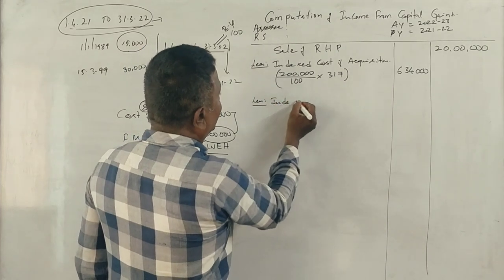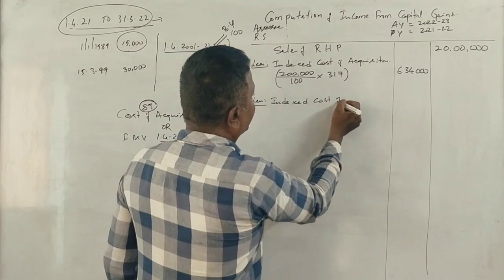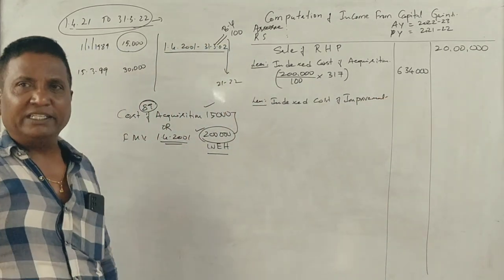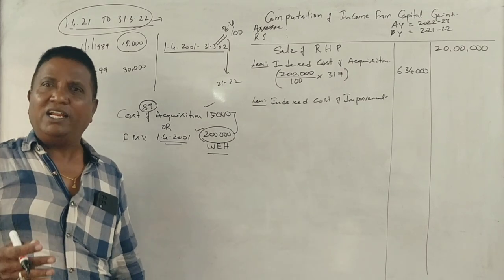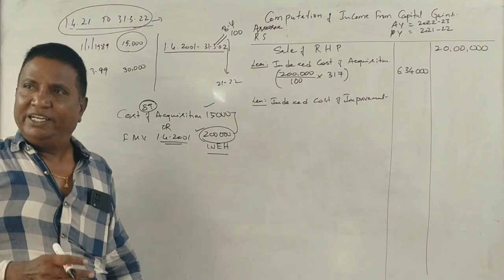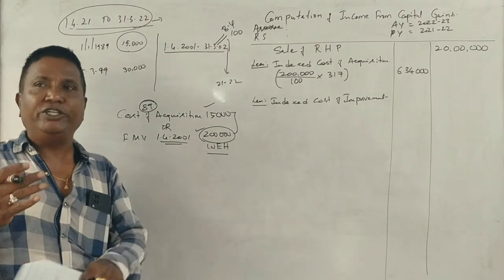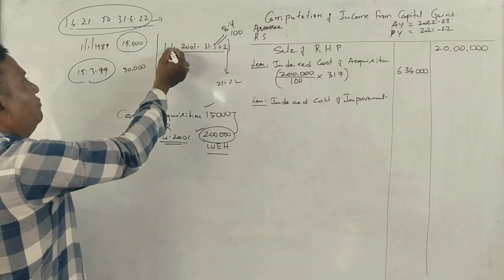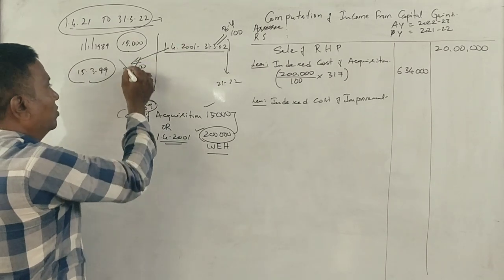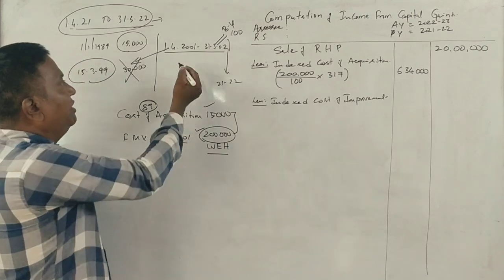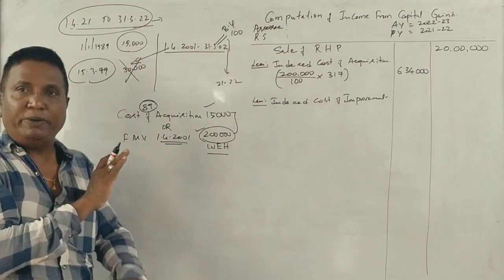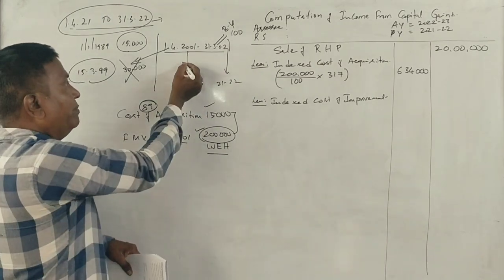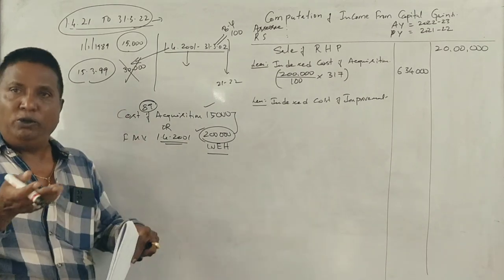Less indexed cost of improvement. Improvement and additions - if you add a first floor or full area, that's an improvement and addition to the house property. Now, any improvement made before 2001-2002 should be ignored. The 30,000 spent in 1999 is ignored. Any improvement made after 2001-2002 should be considered.